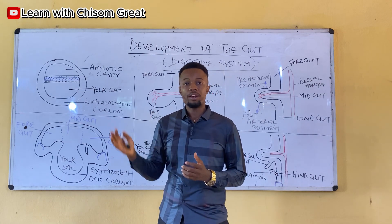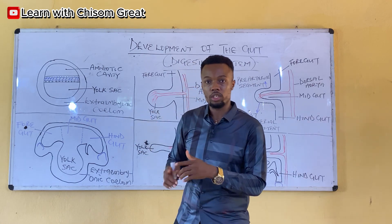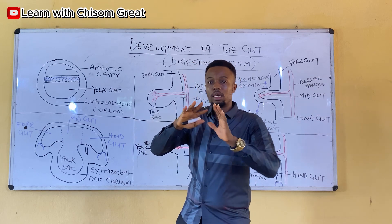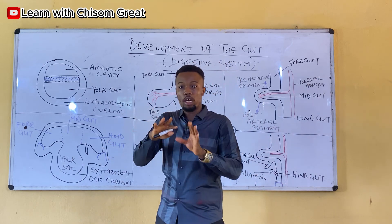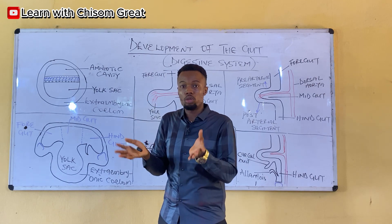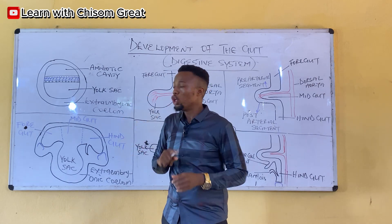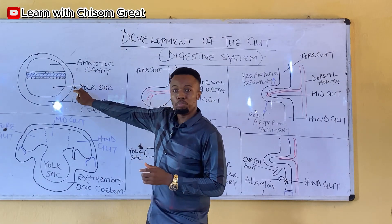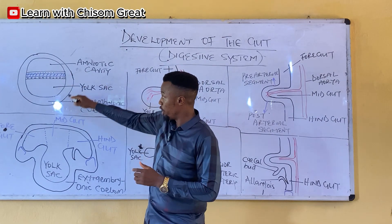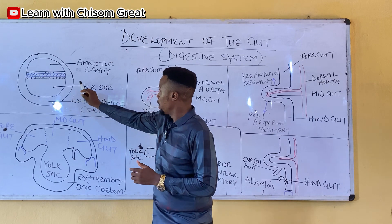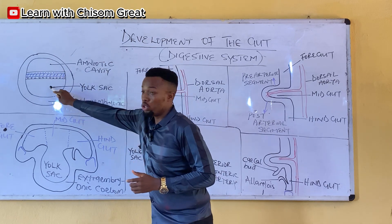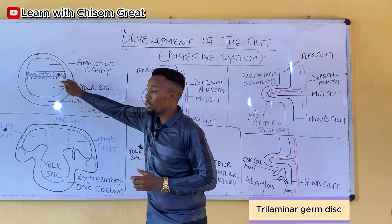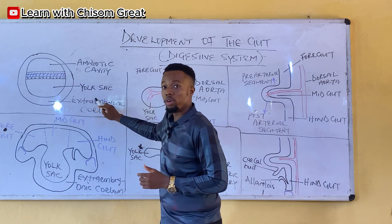By the end of the third week, going into the fourth week, there is a head and tail folding — that is the cephalocaudal folding of the embryo. The embryo looks like a disc before. Here you can see the amniotic cavity, the yolk sac, the trilaminar disc, and the extra-embryonic coelom.